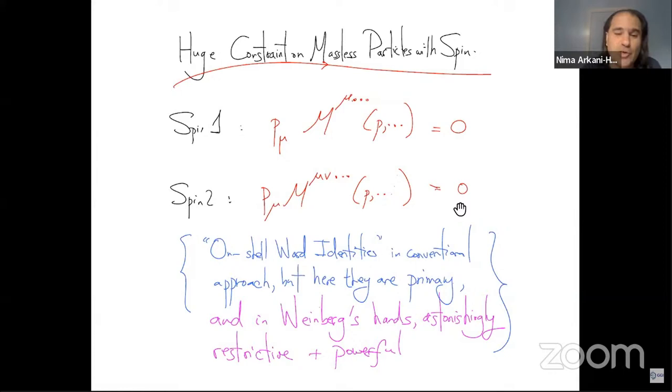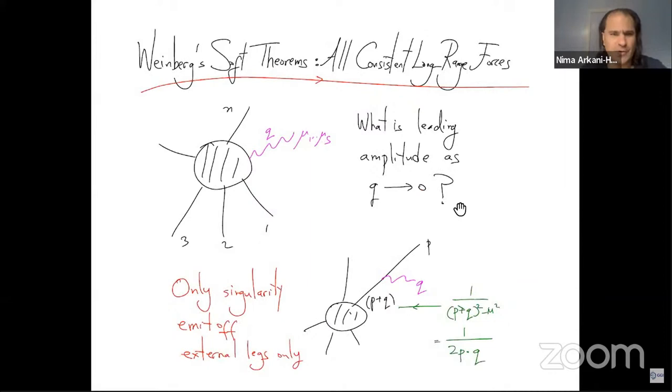In Weinberg's hands, this turned into astonishingly restrictive and powerful statements of the Weinberg soft theorems. And the Weinberg soft theorems tell us about all consistent possible long range forces. So Weinberg started with the idea to imagine you have n particle scattering, but with one additional particle, which has a massive particle with some spin S and some momentum Q. And the question is what could the leading amplitude look like as Q goes to zero.